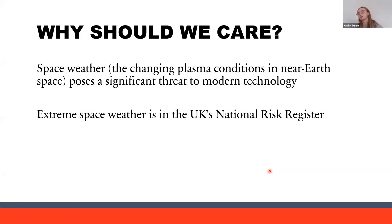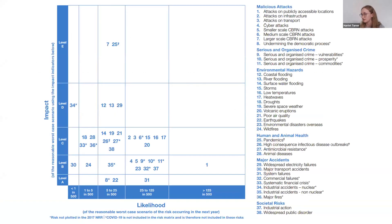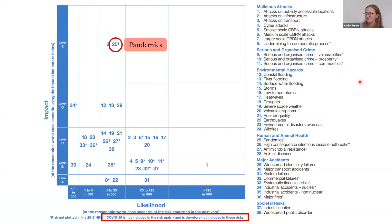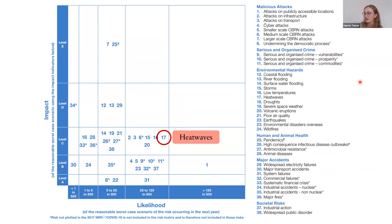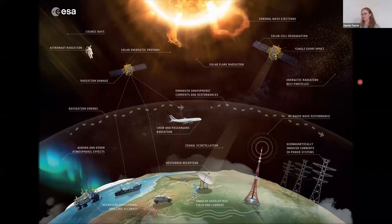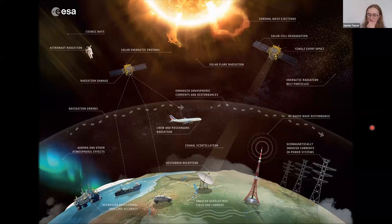So why should we care about this? Space weather — the changing plasma conditions in near-Earth space — poses a significant threat to modern technology. Extreme space weather is on the UK's national risk register, which plots likelihood against impact. A few things to highlight include pandemics, coast and river flooding, heat waves, and severe space weather, which sits roughly in the middle. Impacts of space weather include satellite effects, impacts on railways, and of course brighter aurora — so it's not all bad.